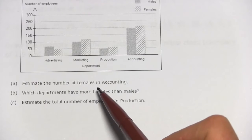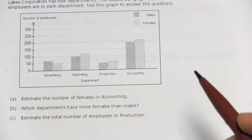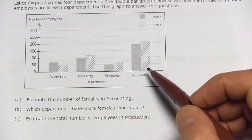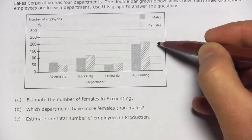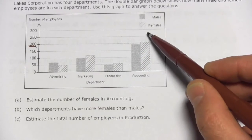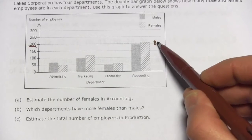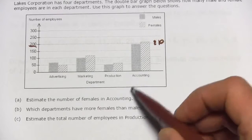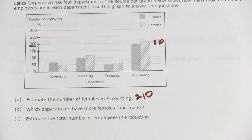Question A says, Estimate the number of females in accounting. To do that, all we need to do is look at the chart for accounting. The females are the striped ones, and it looks like it comes a little bit over this line that's at 200. It's 50 to the next line, so I'm going to guess that's about 210 there. It's just a little over the line, so let's say 210 females in accounting.